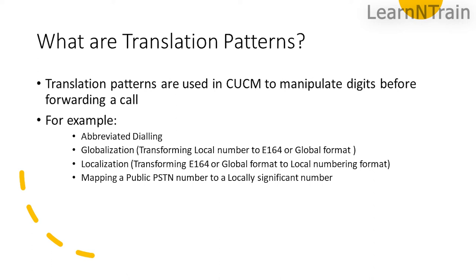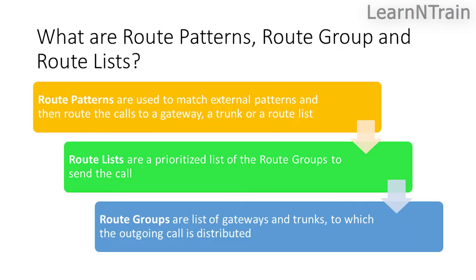What are translation patterns? Translation patterns are used in CUCM to manipulate digits before forwarding a call. For example, abbreviated dialing, globalization — transforming local number to E.164 or global format — localization — transforming E.164 or global format to local numbering format — and mapping a public PSTN number to a locally significant number.